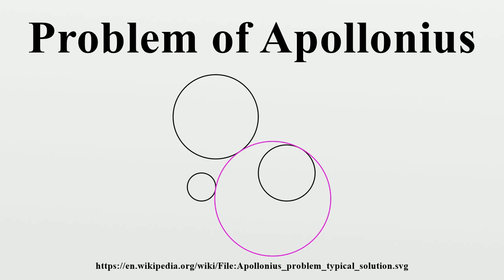François Viette found such a solution by exploiting limiting cases. Any of the three given circles can be shrunk to zero radius or expanded to infinite radius. Viette's approach, which uses simpler limiting cases to solve more complicated ones, is considered a plausible reconstruction of Apollonius' method.